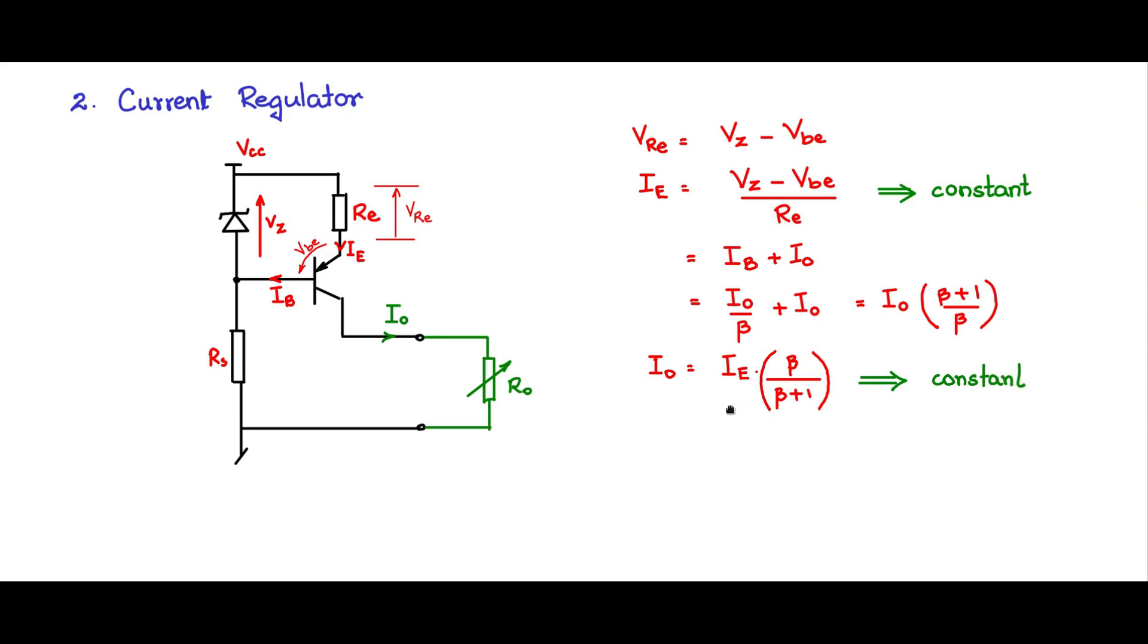Now here IE is a constant as we saw here, beta is a constant value for the transistor, so therefore you can say I naught is a constant. So I naught is constant irrespective of power supply variations VCC, irrespective of variation in R naught as we see that R naught does not figure in this equation. Therefore this is a constant current regulator, so very nice circuit has lot of applications.